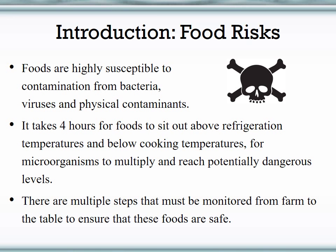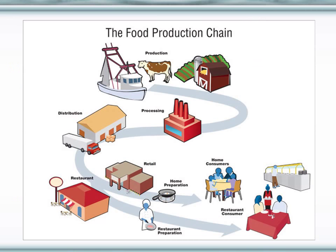Because of this very high susceptibility, there are multiple steps that must be monitored from the farm to the table to ensure that the foods we eat are safe. Foods have a high level of risk. Let's take a look at the food production chain to see where we actually have these risks and what needs to be monitored.